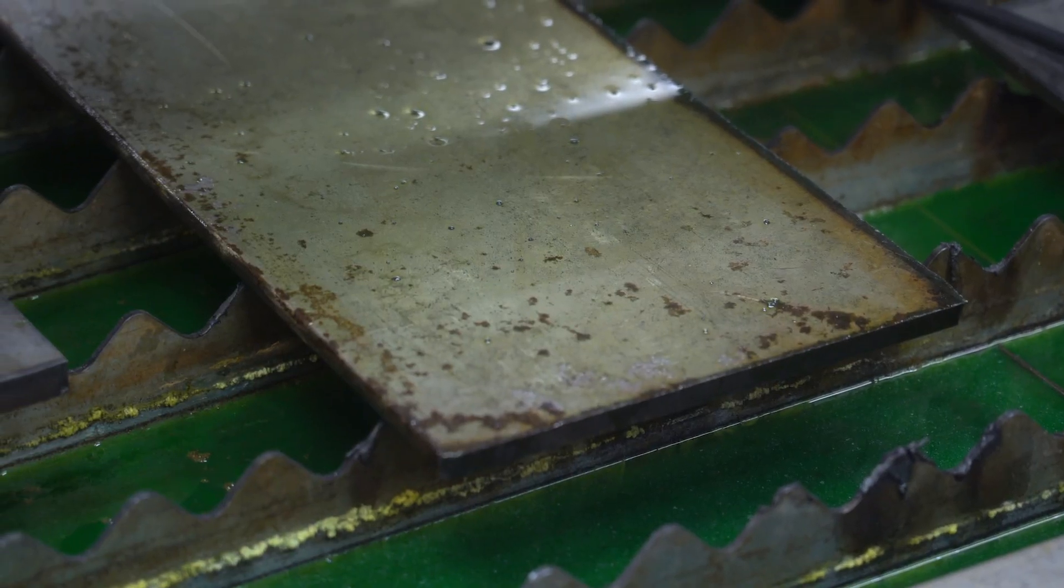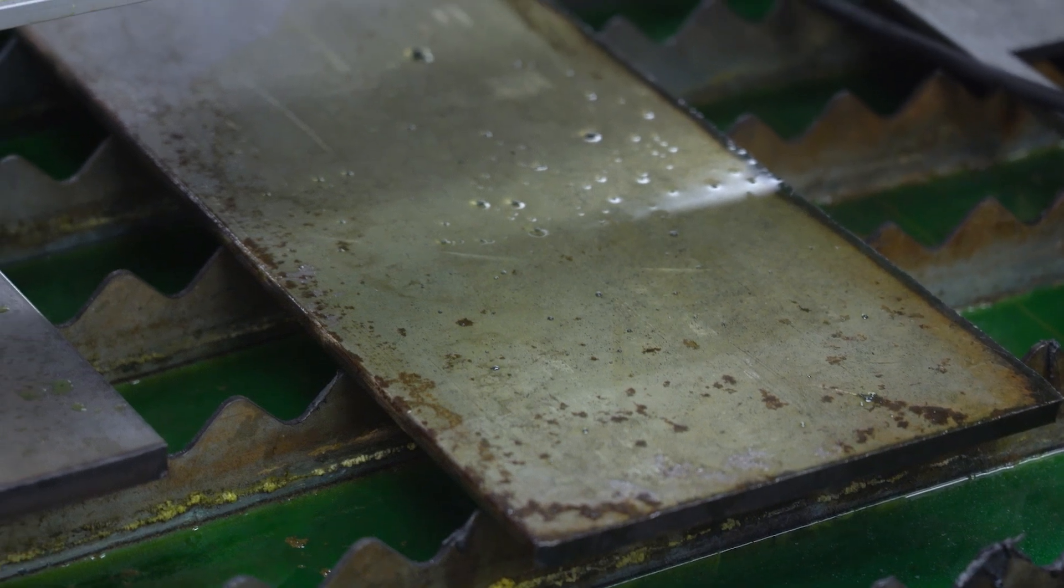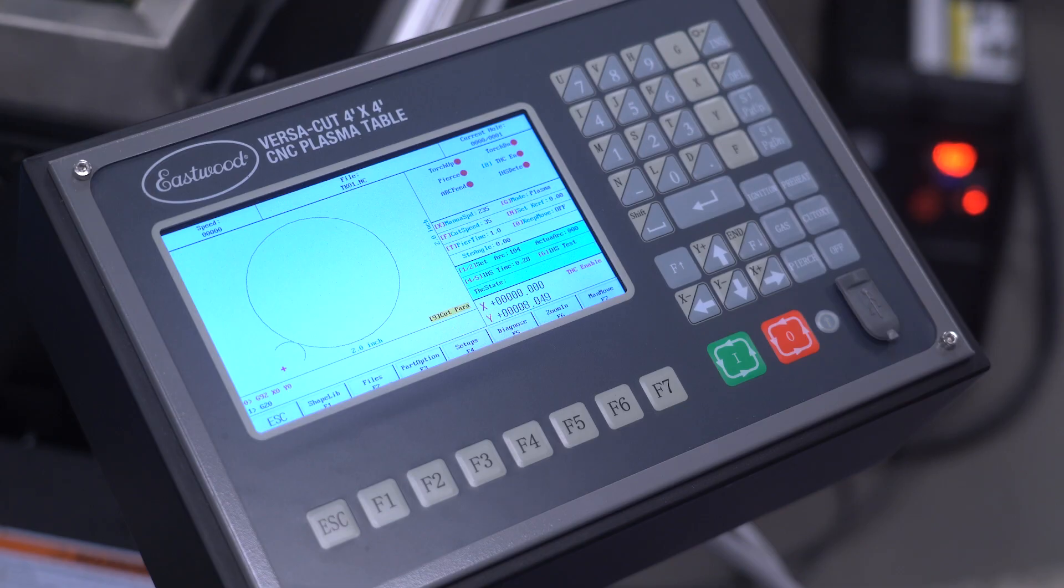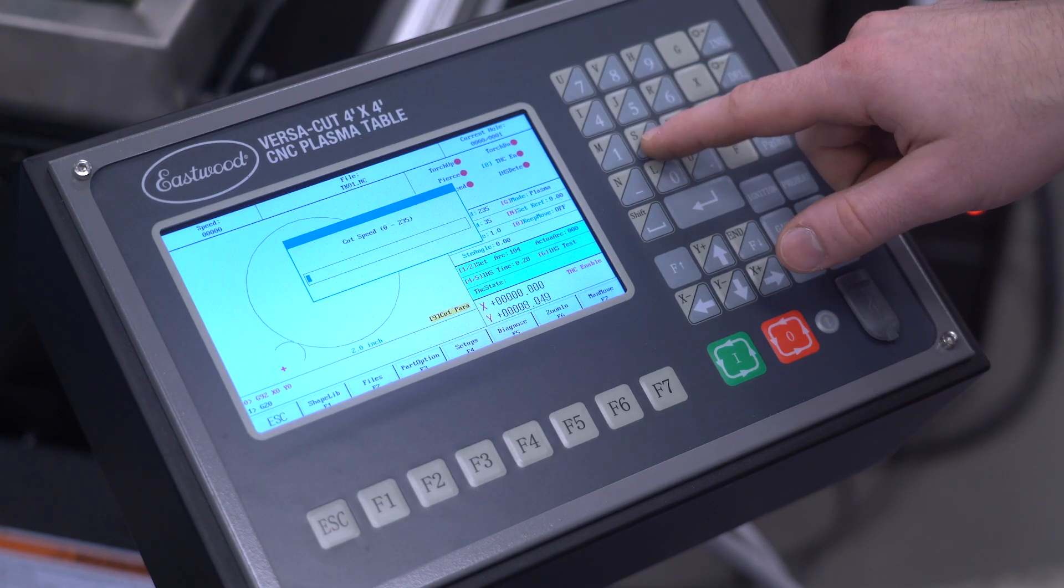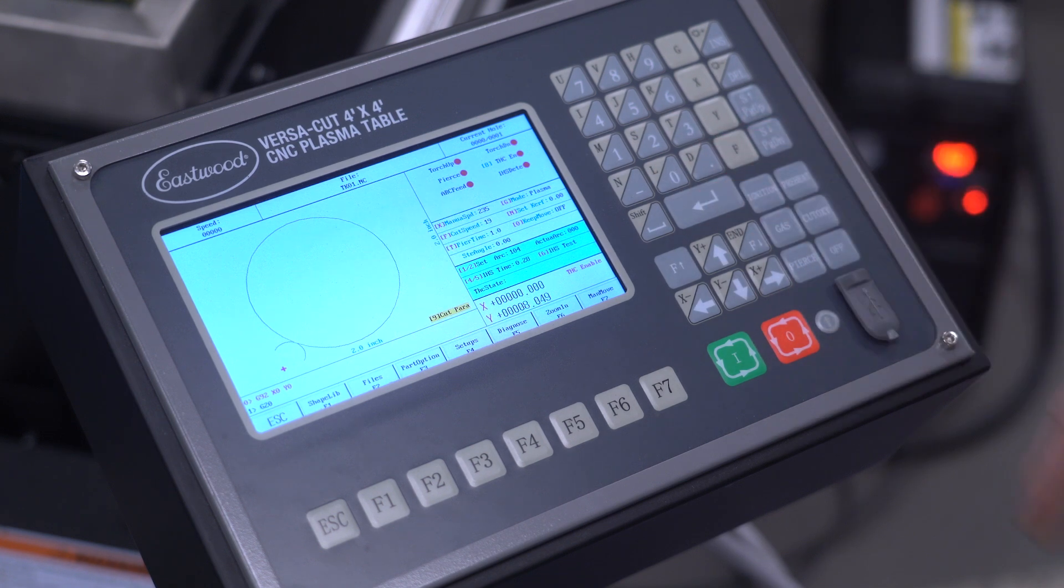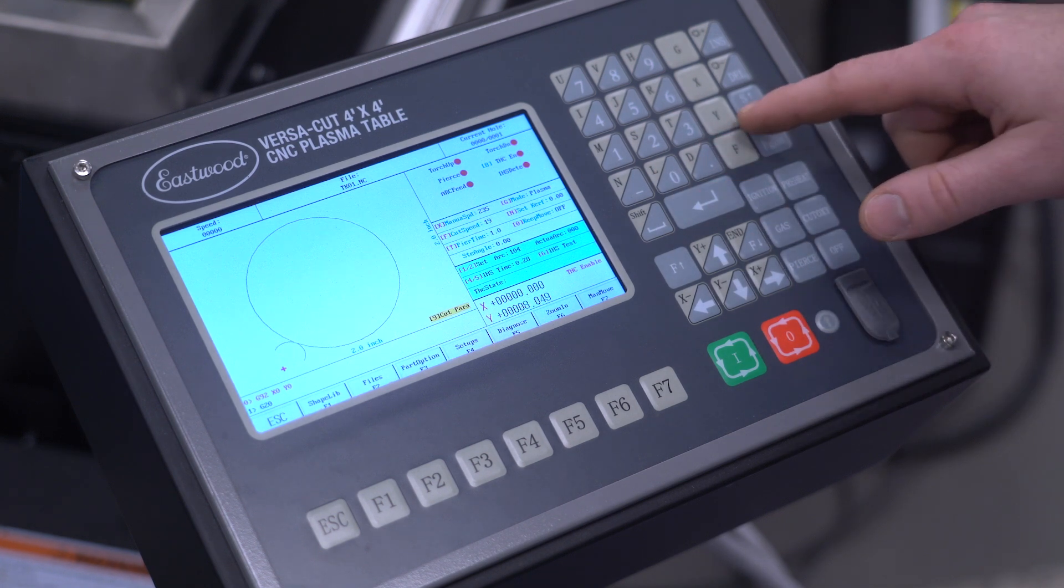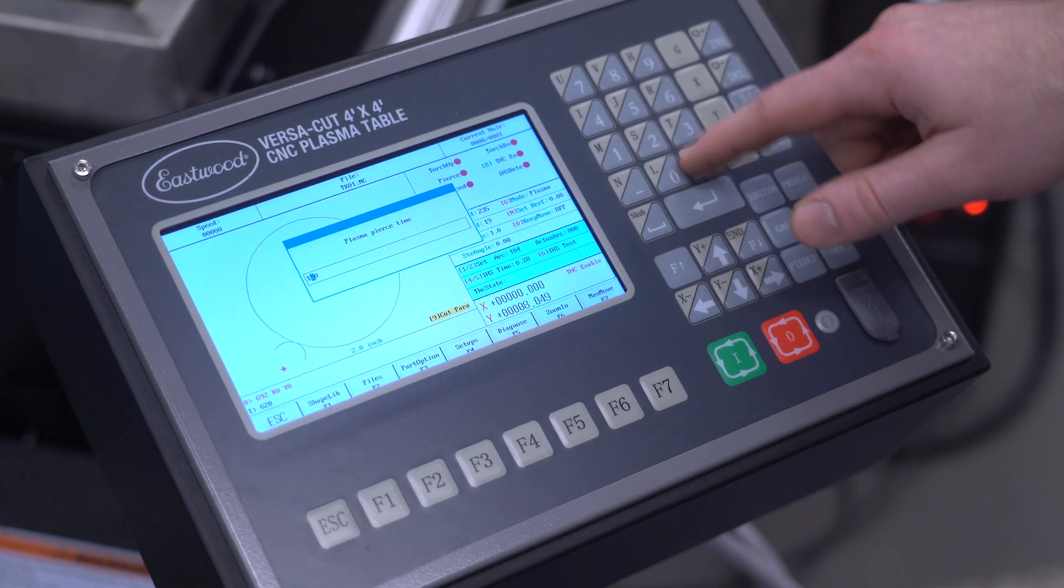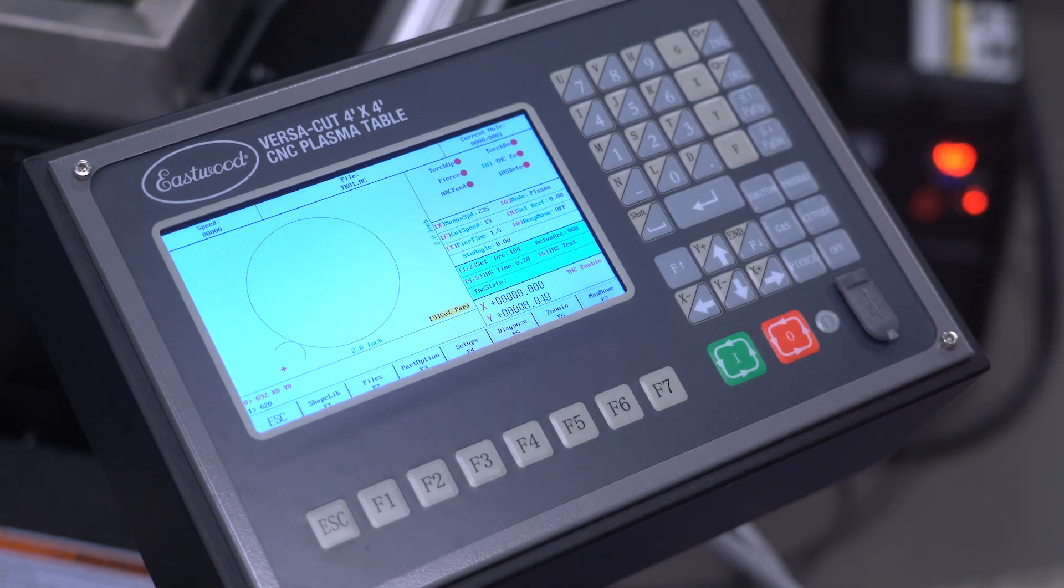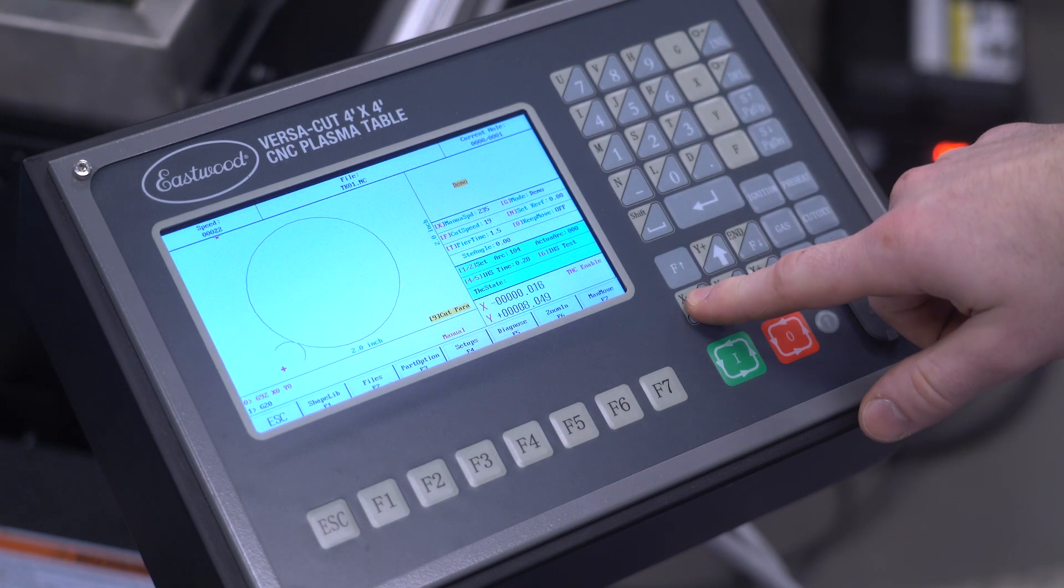Here we have a 3 1⁄8 inch plate a little thick to center pierce and I have my part. I've turned the cut speed way down, bumped the pierce time up a little more. I'll quick switch to demo mode and I'll position the torch where I want to start.